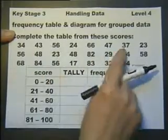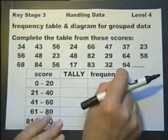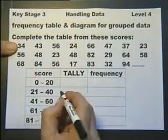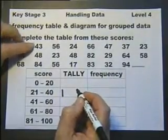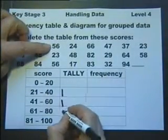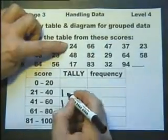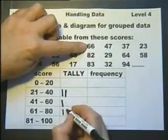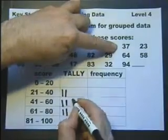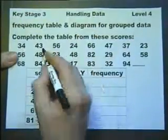Here's some results for an exam, some scores. Somebody got 34%, so that's in that group there. Somebody got 43%, so that's in that group there. Somebody got 56, somebody got 24, somebody got 66, somebody got 47, somebody got 37 and so on.